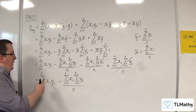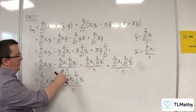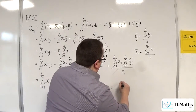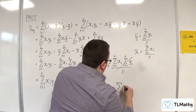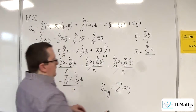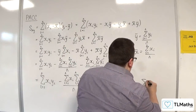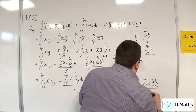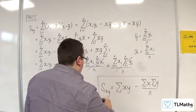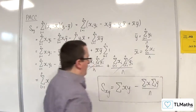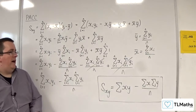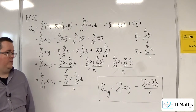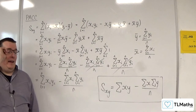Sometimes you see the abbreviated notation without writing i=1 to n explicitly. So we can write S_xy as equal to the sum of x_i·y_i, take away the sum of x's times the sum of y's, divided by n. That is the easier-to-use form for S_xy in the majority of cases.